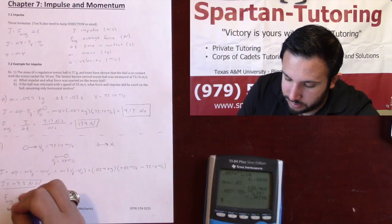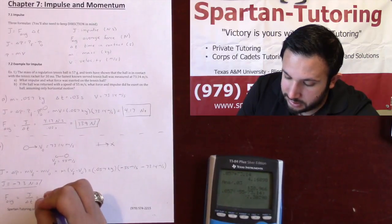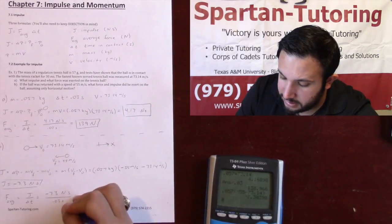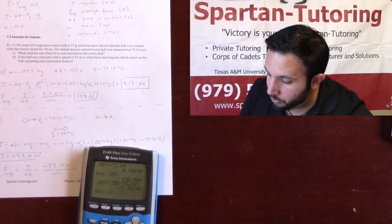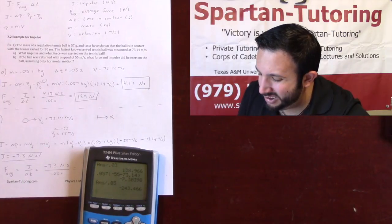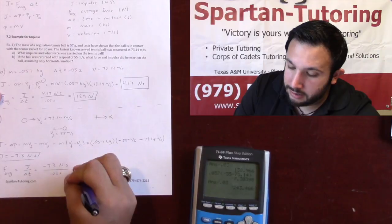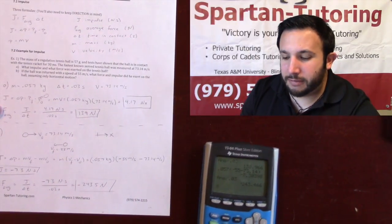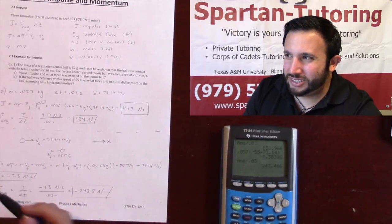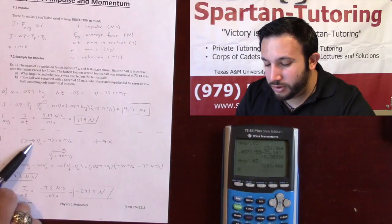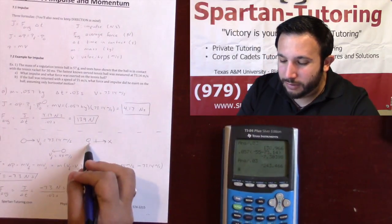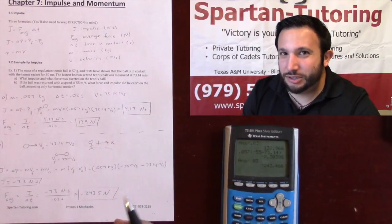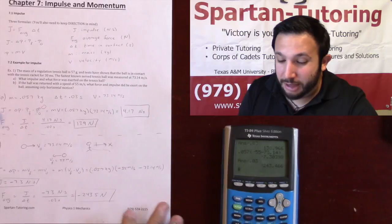To find average force: impulse divided by change in time. Impulse is negative 7.3 newton-seconds and contact time is 0.03 seconds, giving negative 243.5 newtons. The negative sign makes sense — a positive result would imply the ball was hit in the positive direction, which wouldn't make sense for a return. He hit it back in the negative direction, which is what you're supposed to do in tennis.